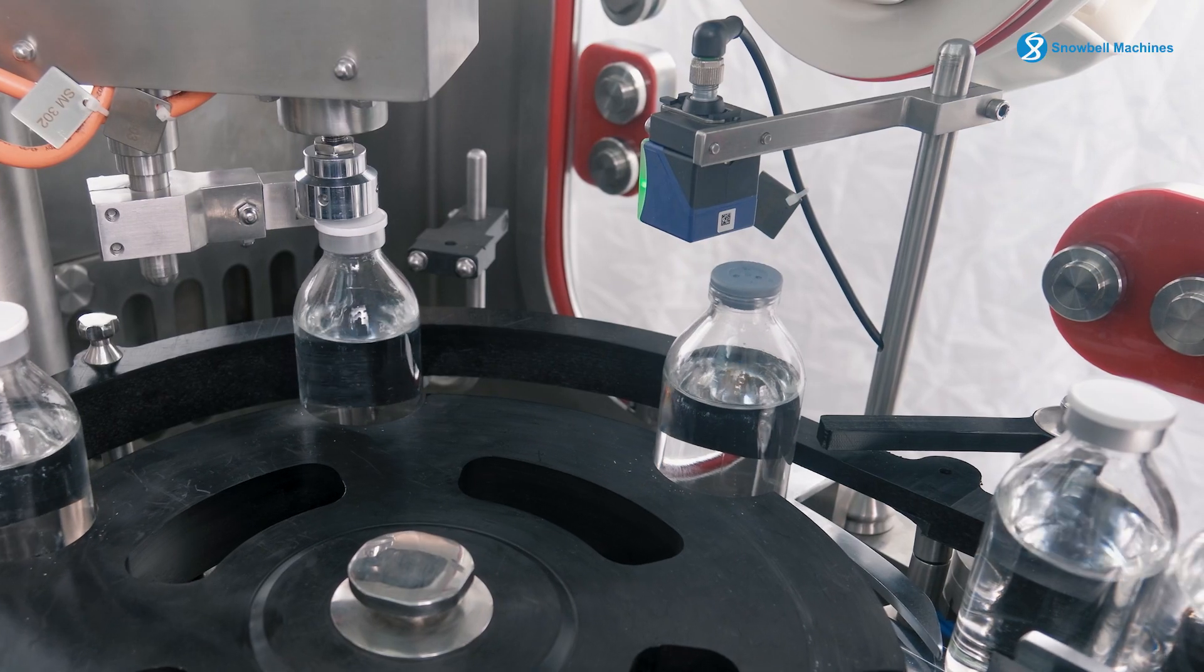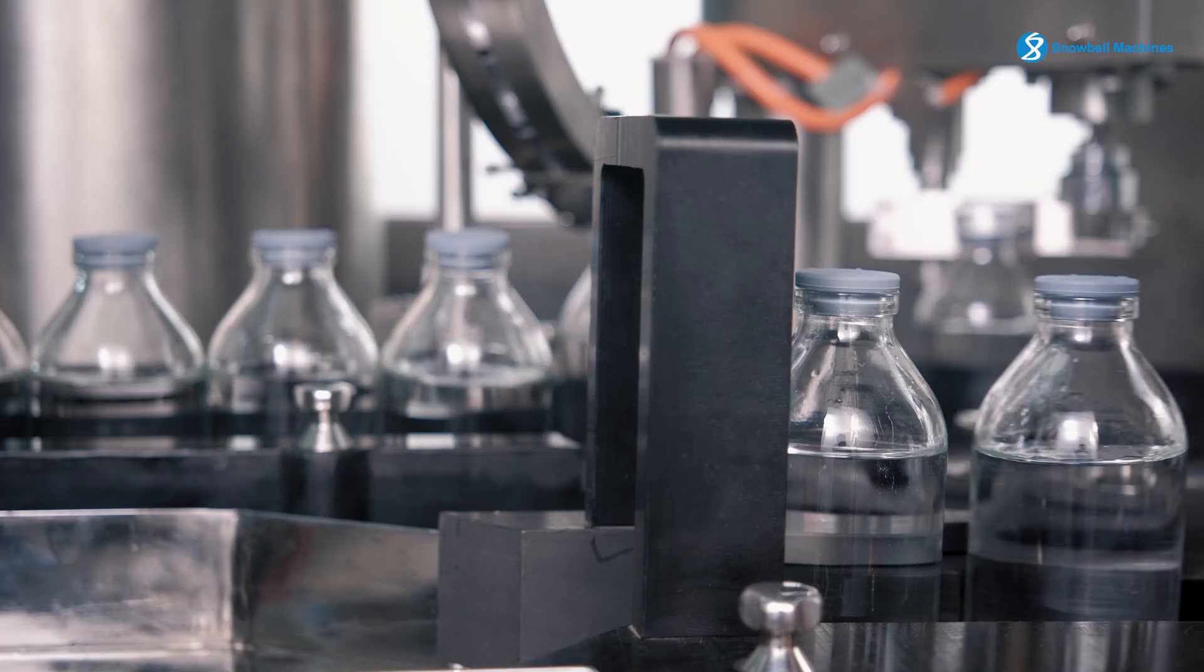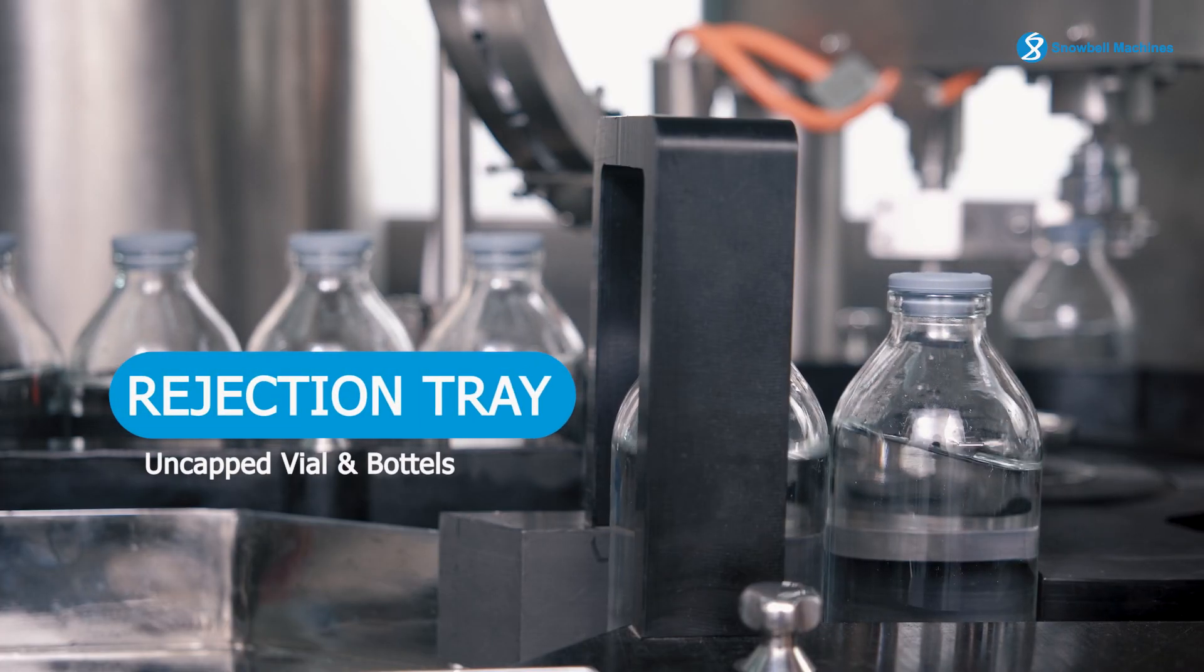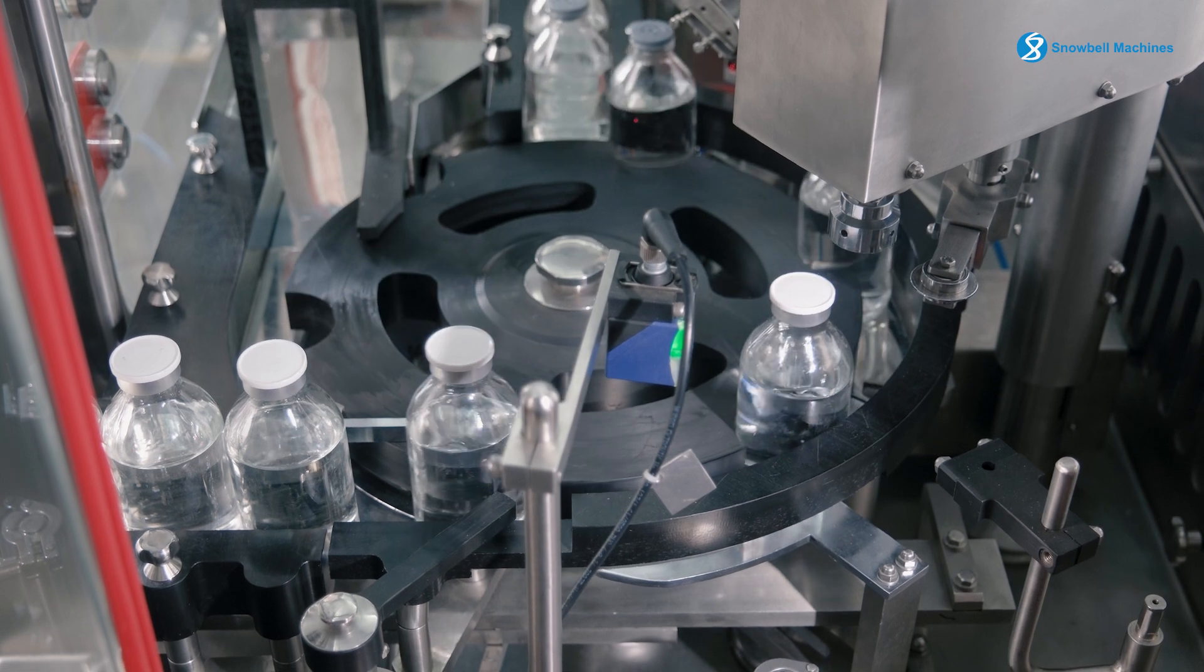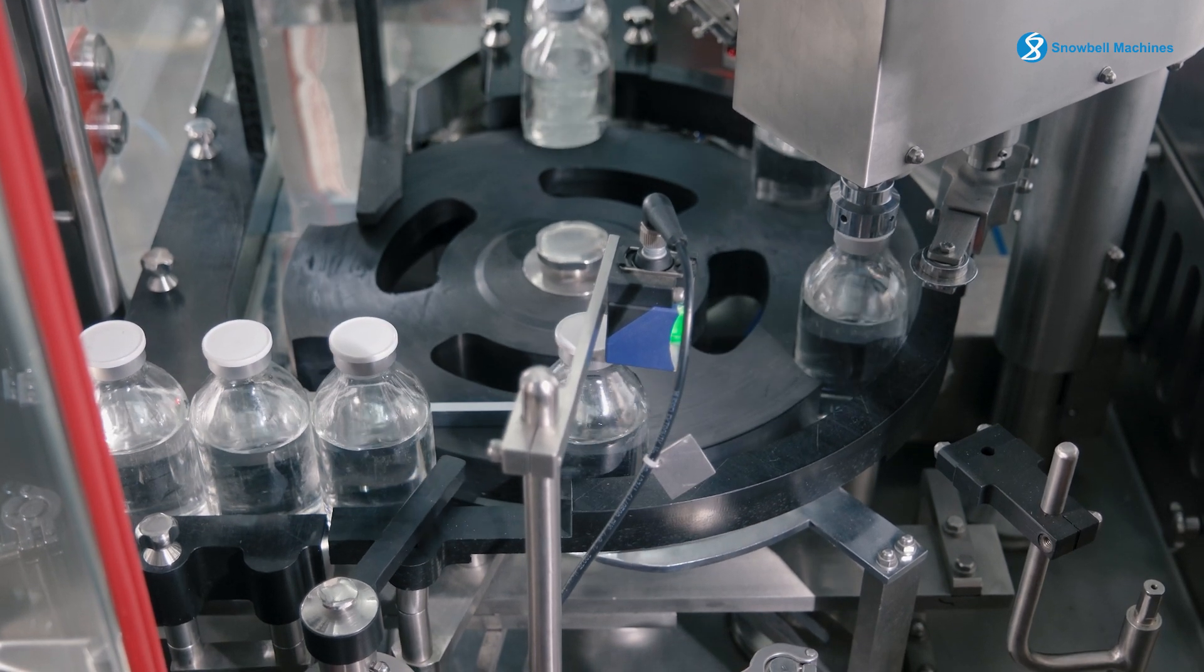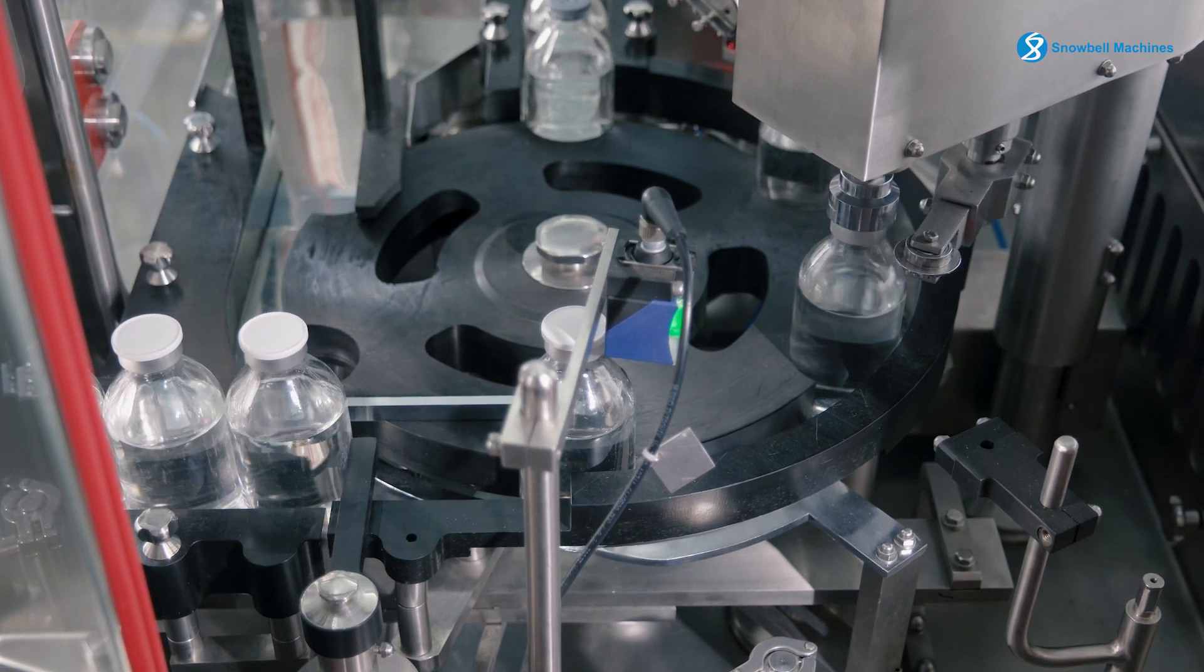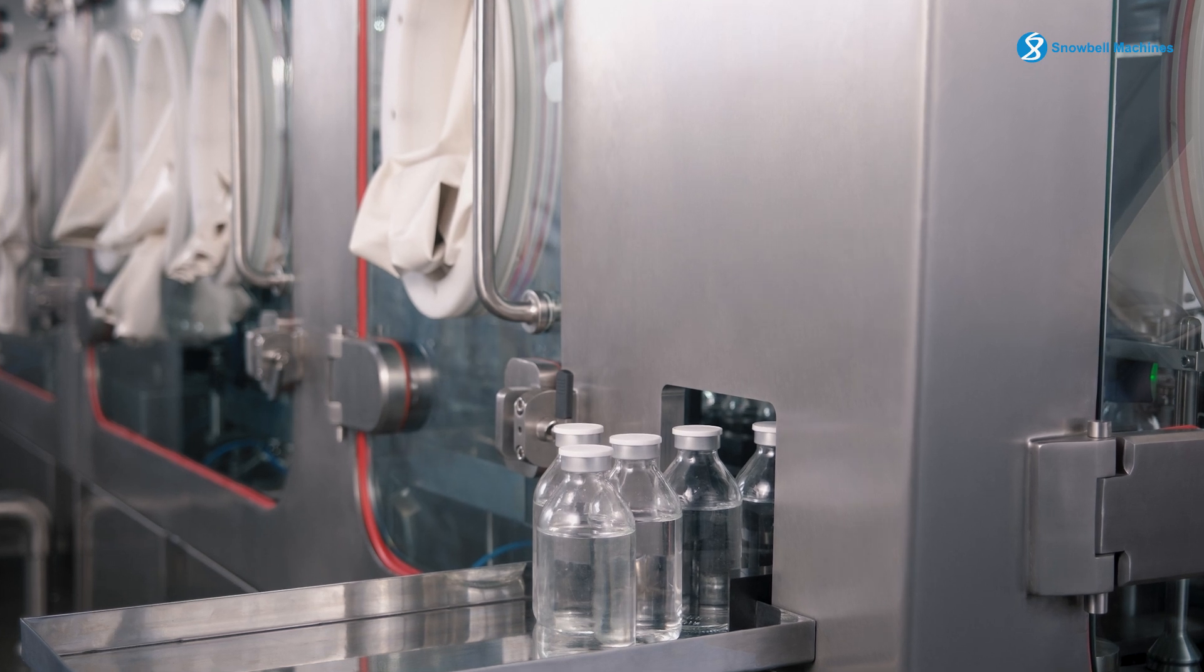The rejection system removes the uncapped vials and bottles into a rejection tray. The accepted vials and bottles are collected in a collection tray installed outside the isolator.